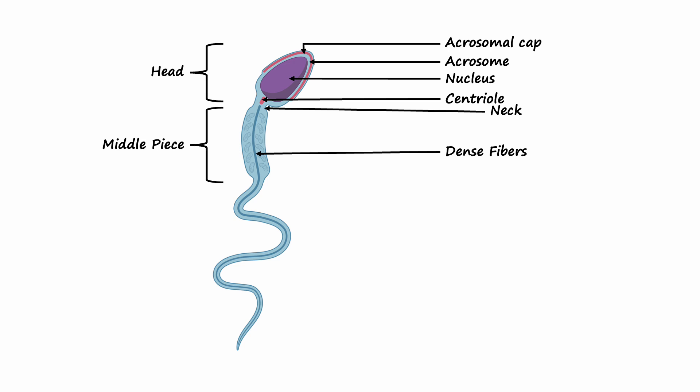The middle piece is the powerhouse of the sperm cell. It contains mitochondria, which are responsible for generating energy in the form of ATP. This energy is essential for powering the sperm cell's movement.